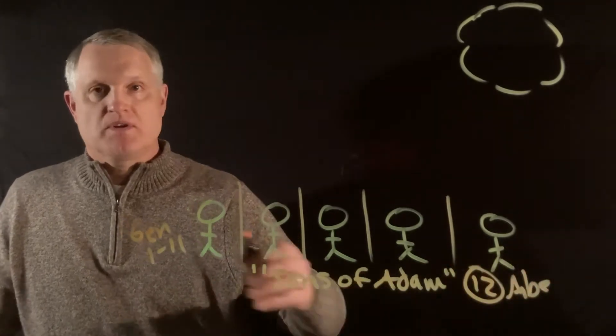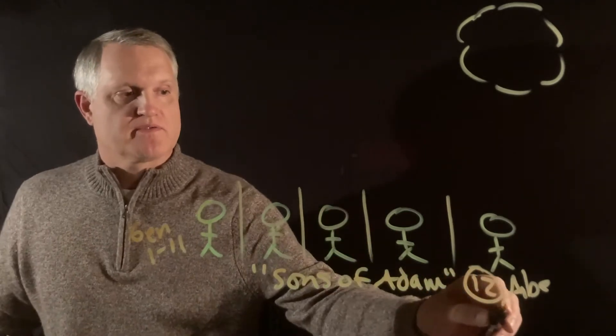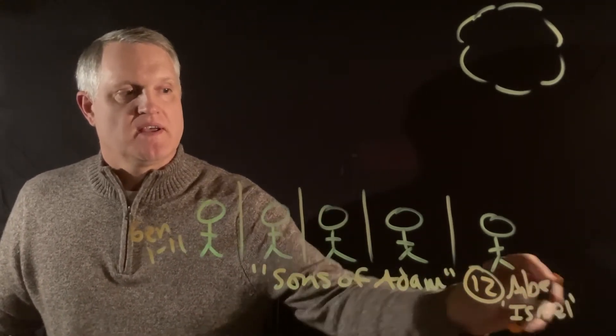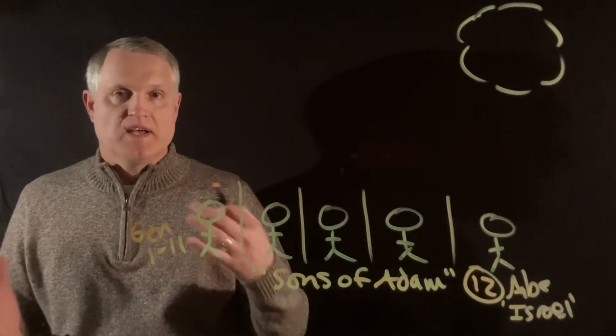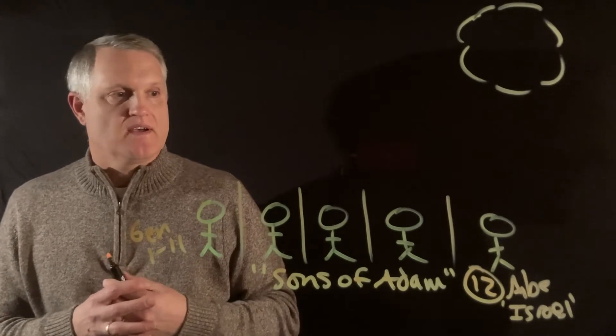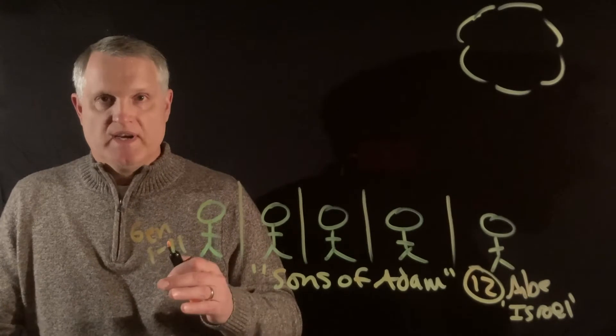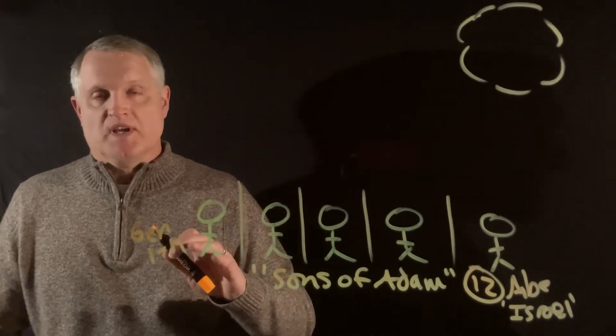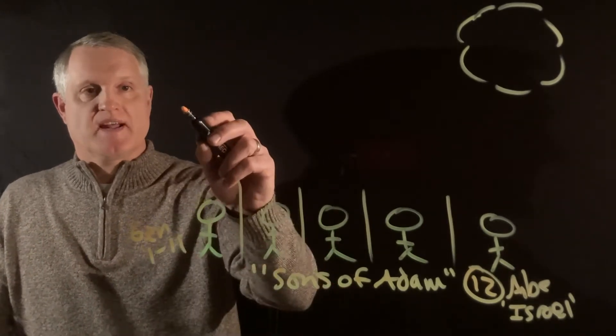And what's going to be happening from then from 12 all the way through Deuteronomy really is the formation of a nation. Israel as a nation is being formed, transformed really out of this family, Abraham, Isaac, and Jacob. Well, in Deuteronomy 4:19, 29 and 32, Moses makes an interesting comment that really puts luster to this picture and fills it out.